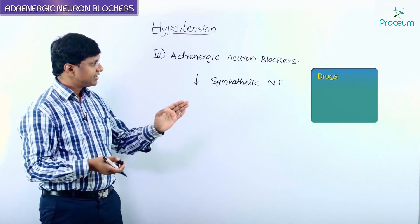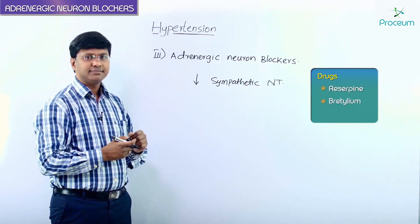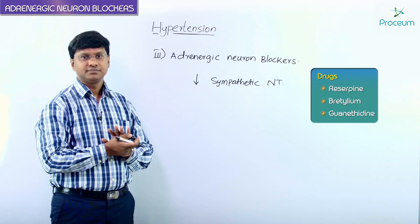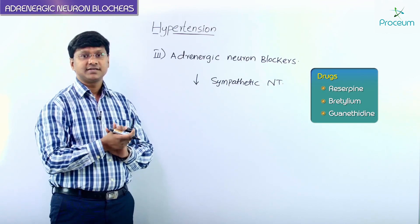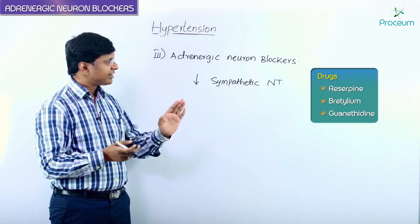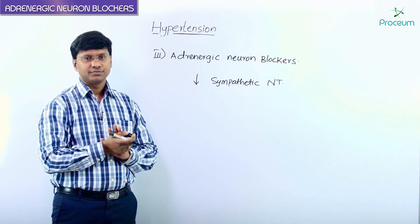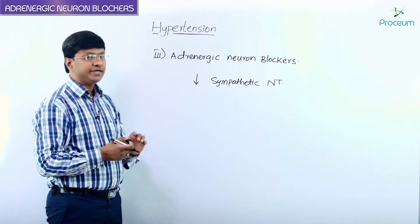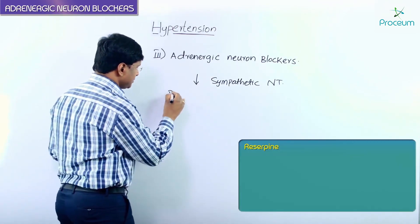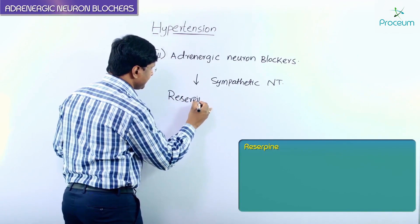The drugs in the adrenergic neuron blocker group include reserpine, bretylium, and guanethidine. These drugs are also rarely used. Now let me talk about the individual drugs, starting with reserpine.